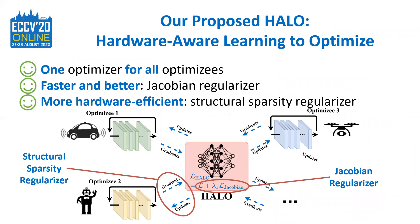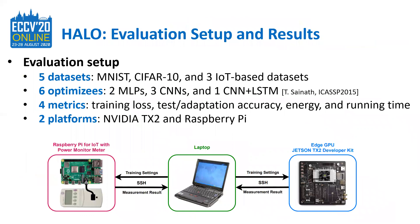To summarize, our HALO optimizer features the following highlights. First, the one-for-all feature: one optimizer for all optimizees. Second, faster and better convergence thanks to the Jacobi Regularizer. Third, being more hardware-efficient via the Structure Sparsity Regularizer. This solves the three challenges caused by the mismatch between prohibitive training costs and limited on-device resources.